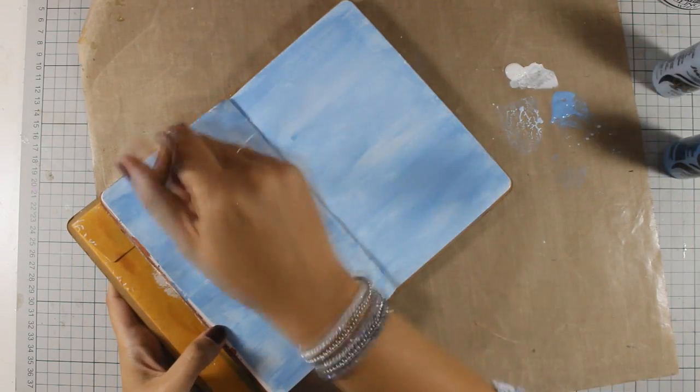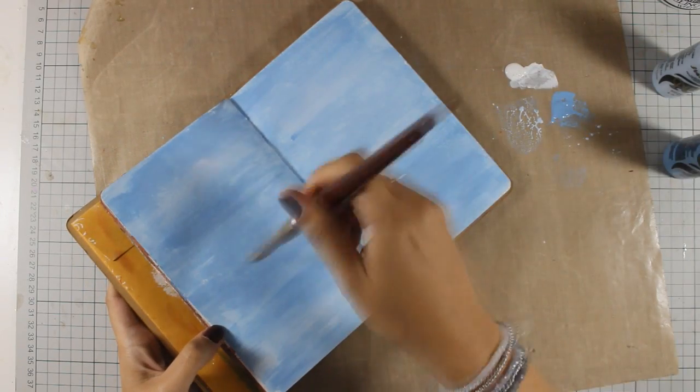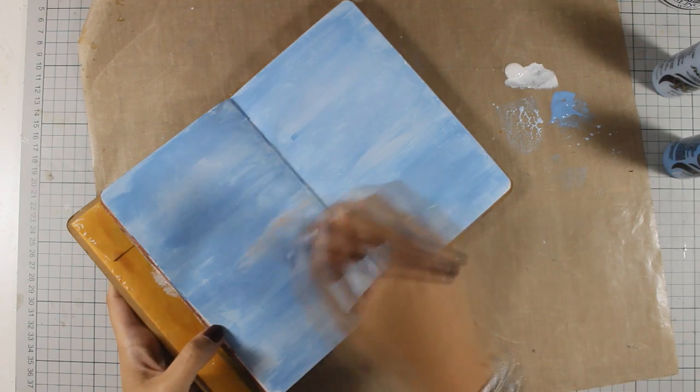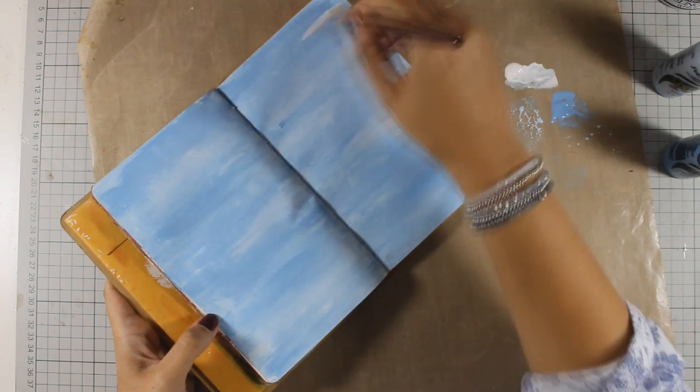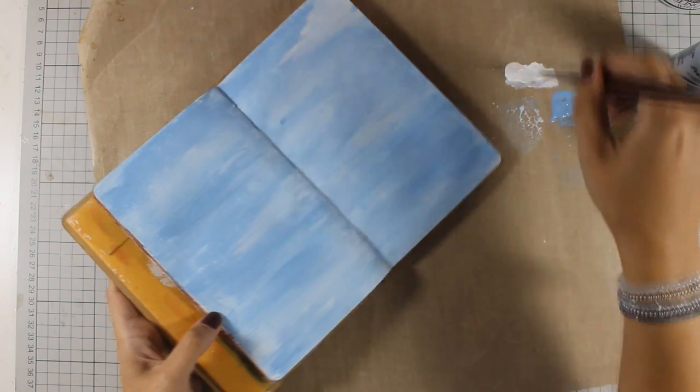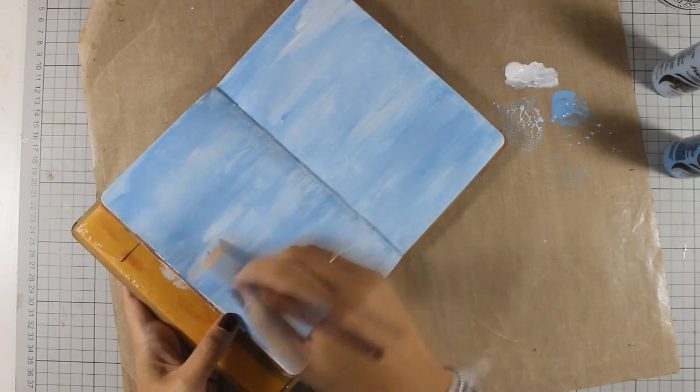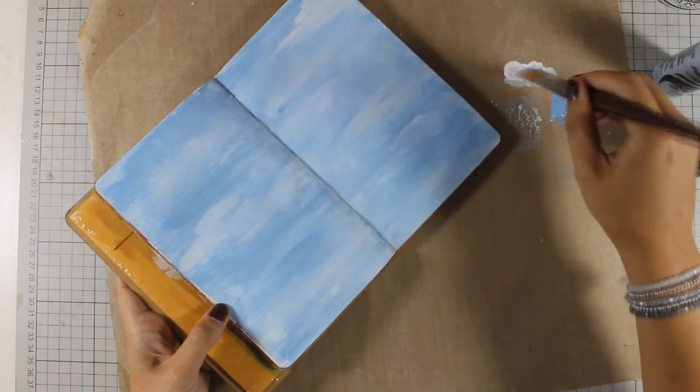Now with my brush I am applying my white acrylic paint to make some areas lighter and I am also going to create clouds.